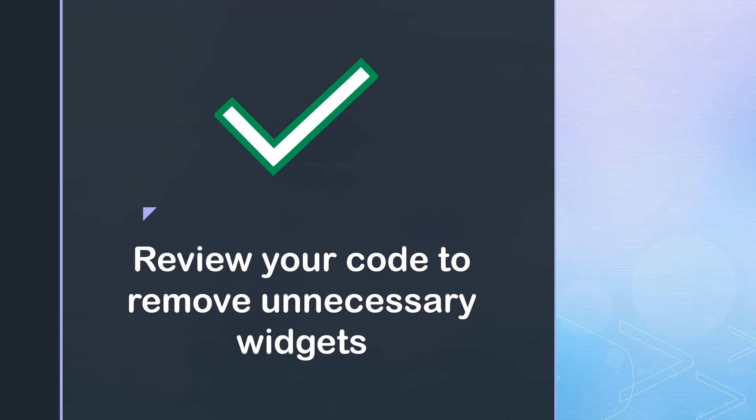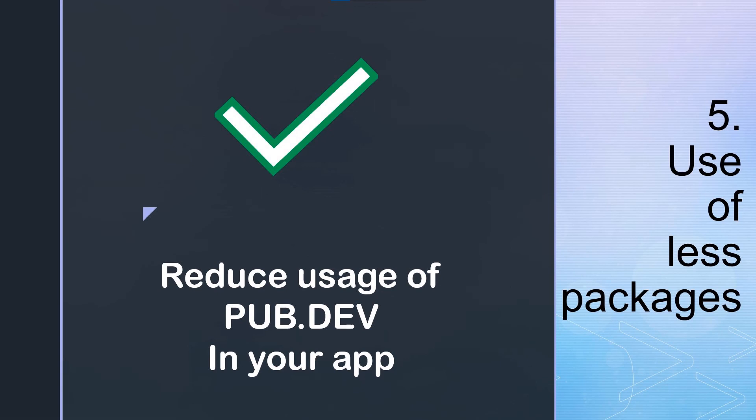Lastly, you should try removing unnecessary widgets in your application. For example, if there is a Column wrapped inside a Column that only has one child, you should remove that outer Column. This way you can remove unnecessary code and unnecessary packages as well. Try to refactor your code as much as you can. These were some of the tips you should use to increase your app's performance.